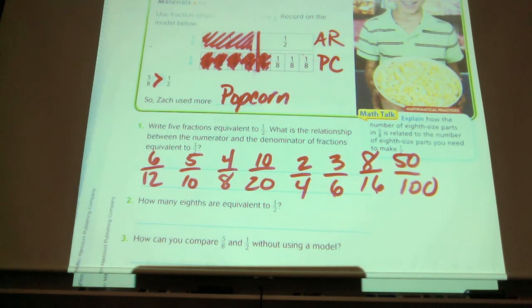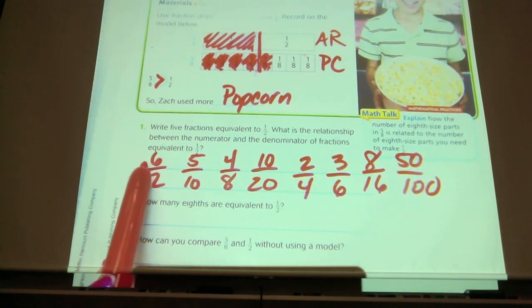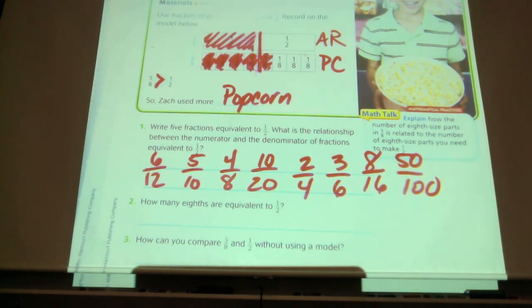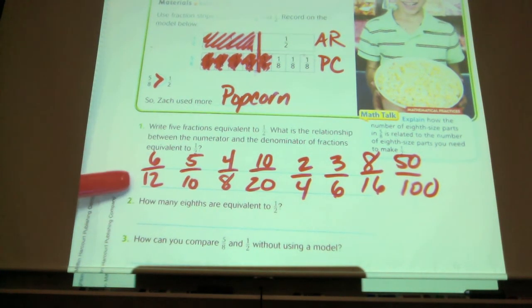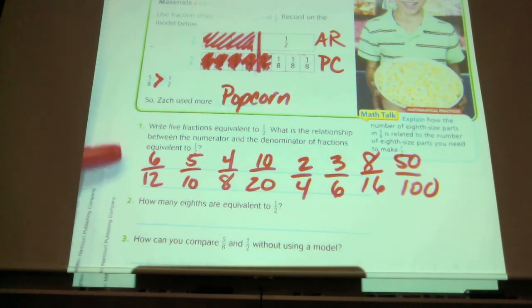The next part of the question says, what is the relationship between the numerator and the denominator? And somebody's used these words before to explain how they knew it was equivalent to a half. What is the relationship between this number and this number?